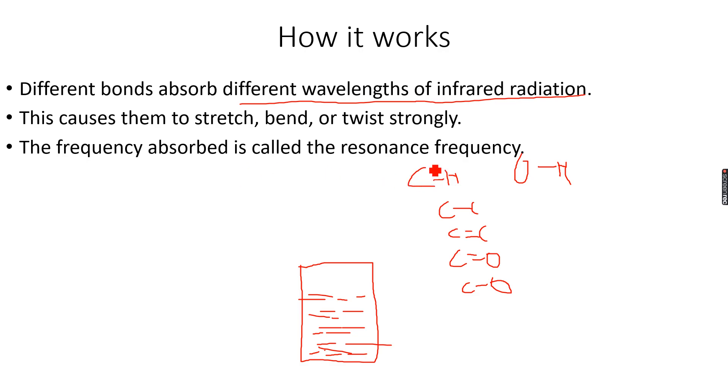You will study this in physics if you're taking it in your A2 level, but for now what is important to know is that this is called the resonance frequency - the frequency that is absorbed. If some infrared is being absorbed, that means we have an infrared emitter here emitting different wavelengths of infrared radiation.